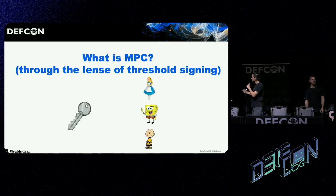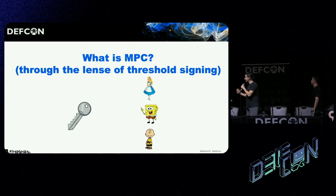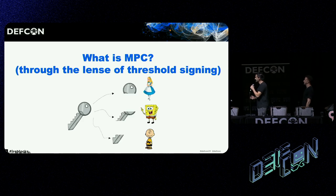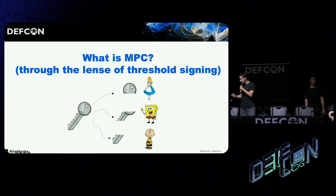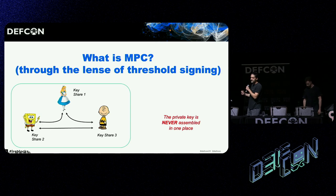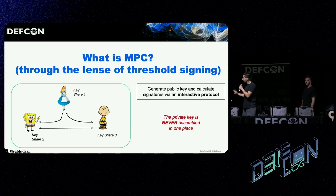You can use multi-party computation, also known as MPC. So what is MPC? At a very high level, the idea is that instead of having one key in one place, the key is split into shares, and those shares reside with different parties. MPC promises much more than what that picture suggests, because the key is never assembled in one place. The parties calculate their shares and the public key via an interactive protocol, and every time they want to sign a transaction, they run a different interactive protocol for calculating the signature.